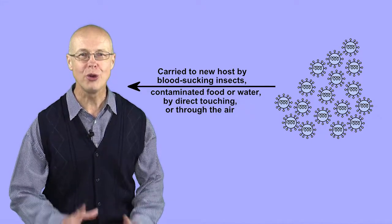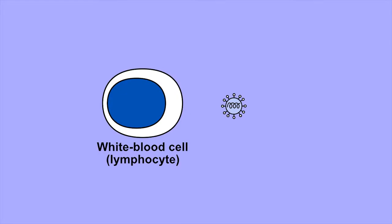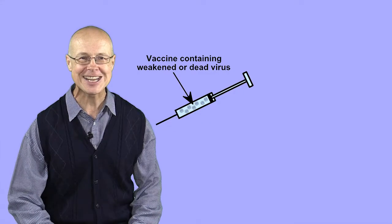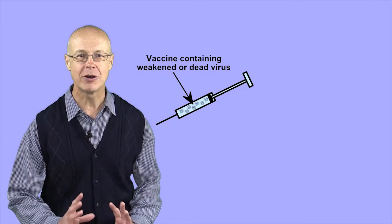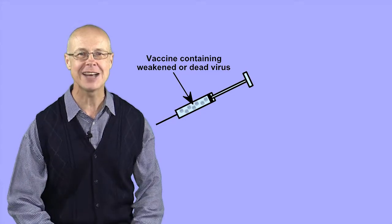Viruses don't have things all their own way, however. Our immune systems, in particular white blood cells called lymphocytes, can produce molecules called antibodies that attach to viruses, preventing them from infecting cells. And vaccines have been developed that give our immune systems a head start in this process.